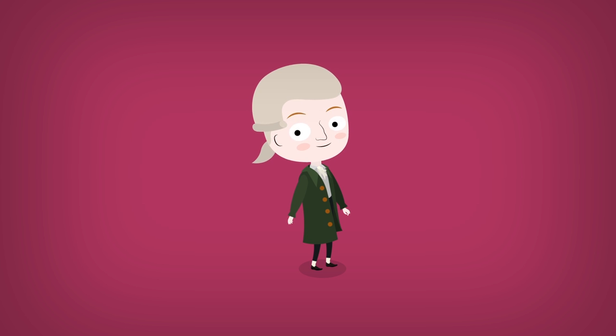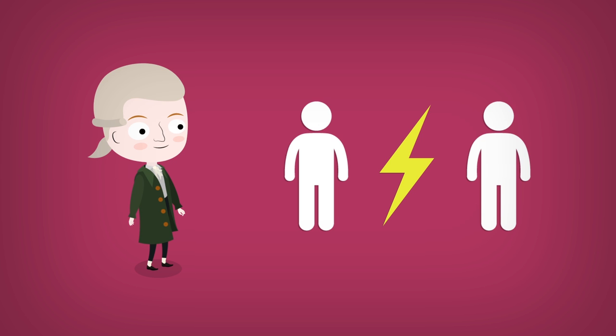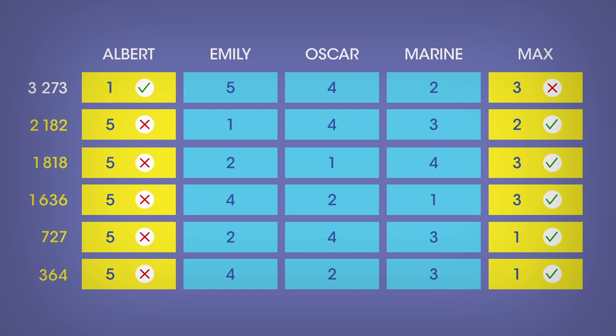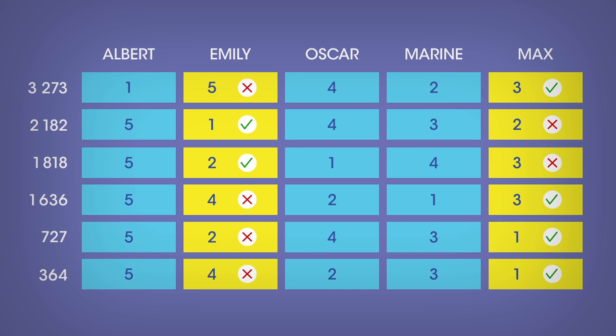Finally, let's try the voting system developed by the mathematician Nicolas de Condorcet. This time, each candidate must face the others one by one, and the candidate with the most victories is said to have won the election. With this last system, Max crushes Albert. He's indeed favored by about 6,000 voters among 10,000. He also crushes Emily with 3,273, plus 1,636, plus 727, plus 364.